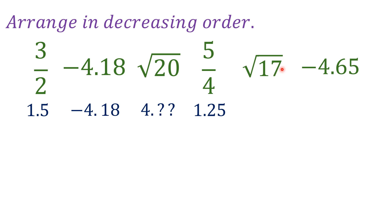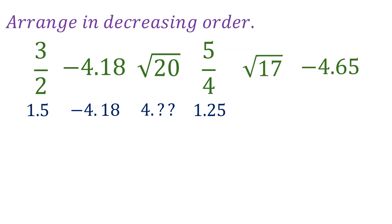For square root of 17, we know it's also between square root of 16 and square root of 25, so it's also between 4 and 5 — just like square root of 20. That means we have two irrational numbers both equal to 4 point something. I'll show you how to compare them when that happens. The remaining number is already a decimal, so just copy it. Now we're ready to compare all the values.